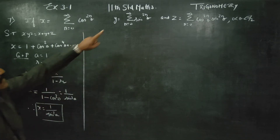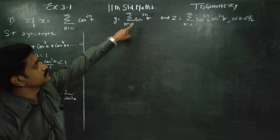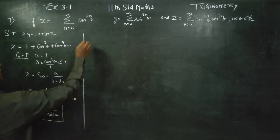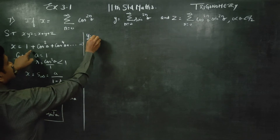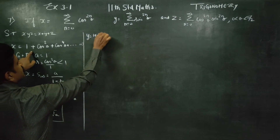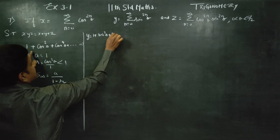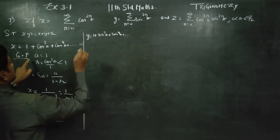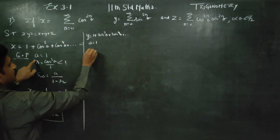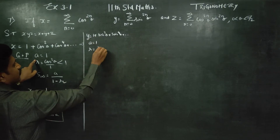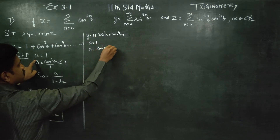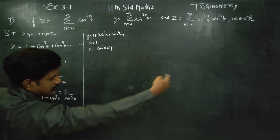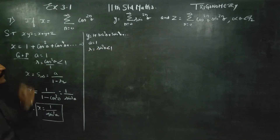Similarly, the sin series is equal to sin square theta. This is the same model. Again, you have to start: Y is equal to 1 plus sin square theta plus sin power 4 theta dot dot dot. A is equal to 1, R is equal to T2 by T1. Sin square theta is also less than 1 — sin 90 is equal to 1, so for other angles less than 1 — we use the S infinity formula.